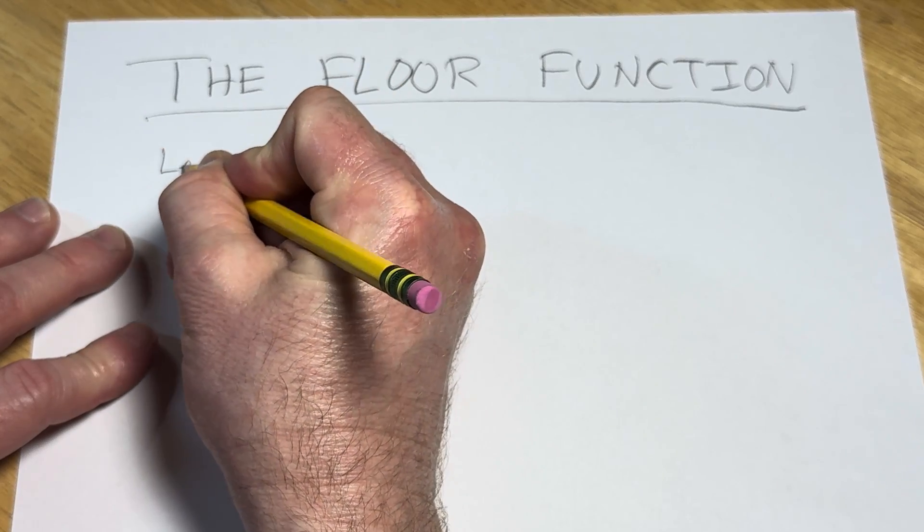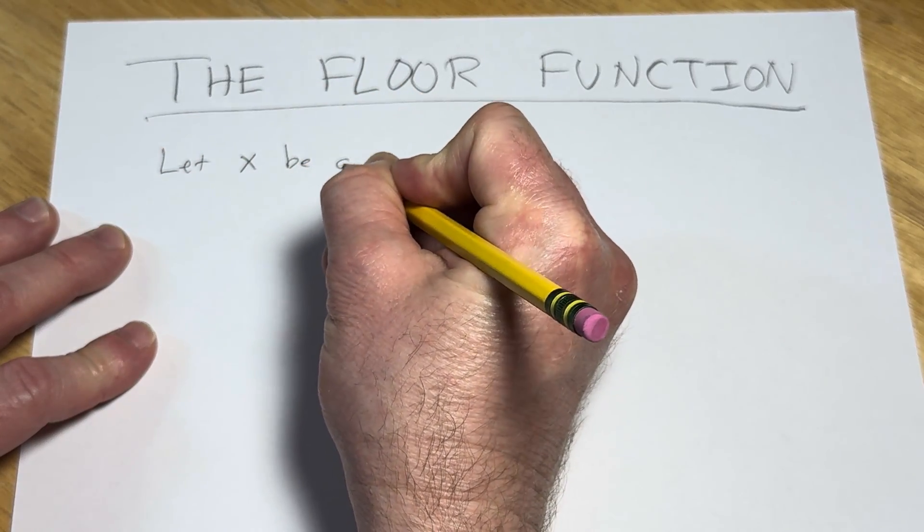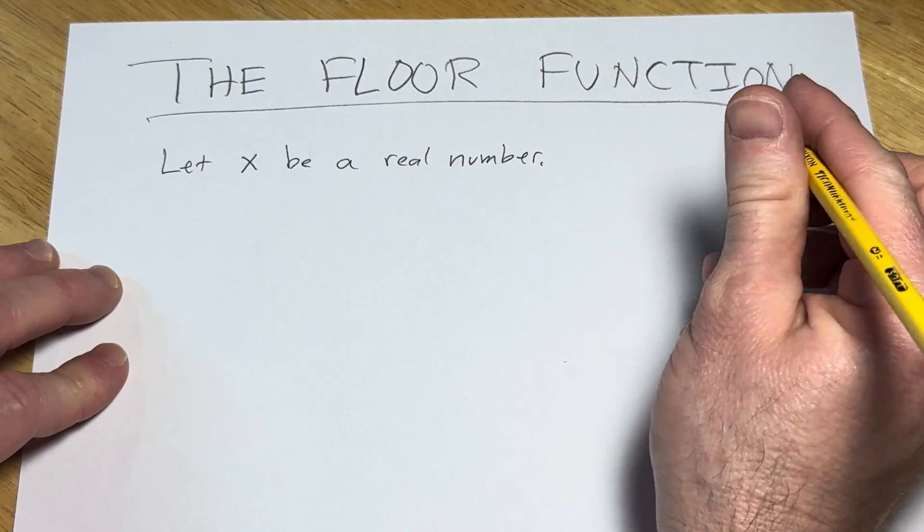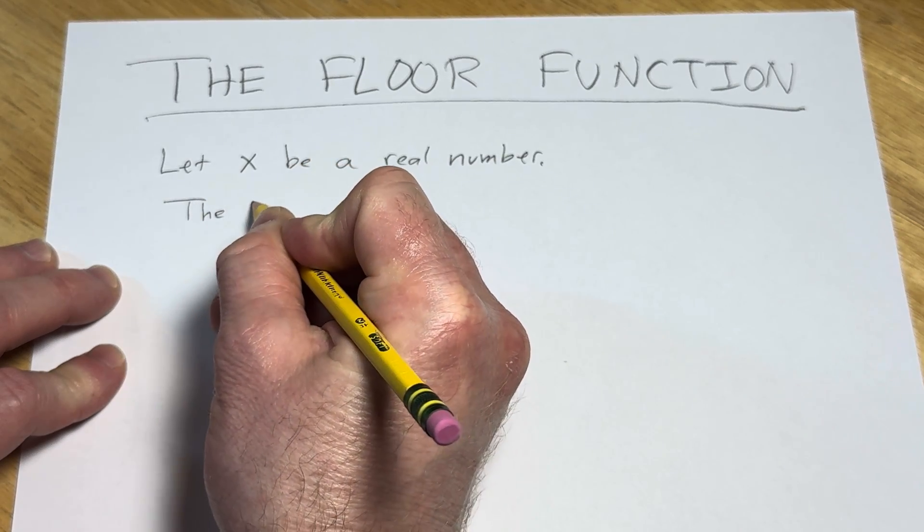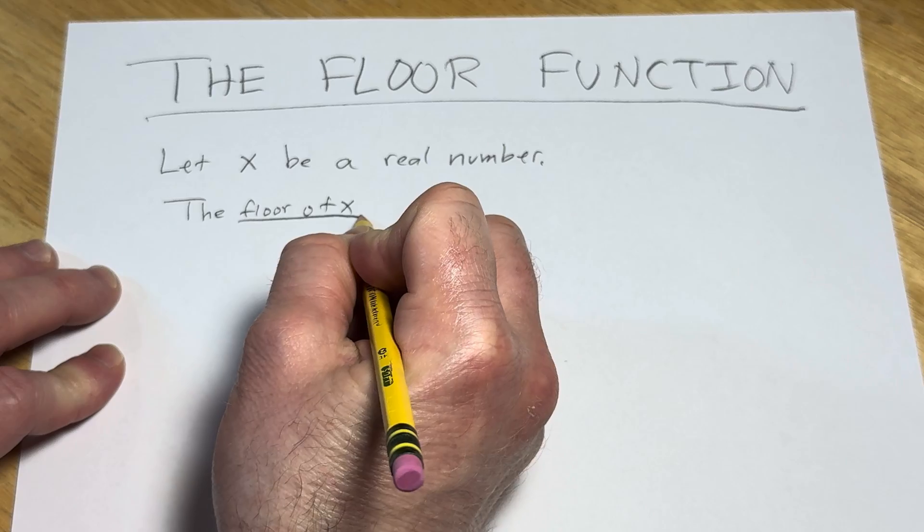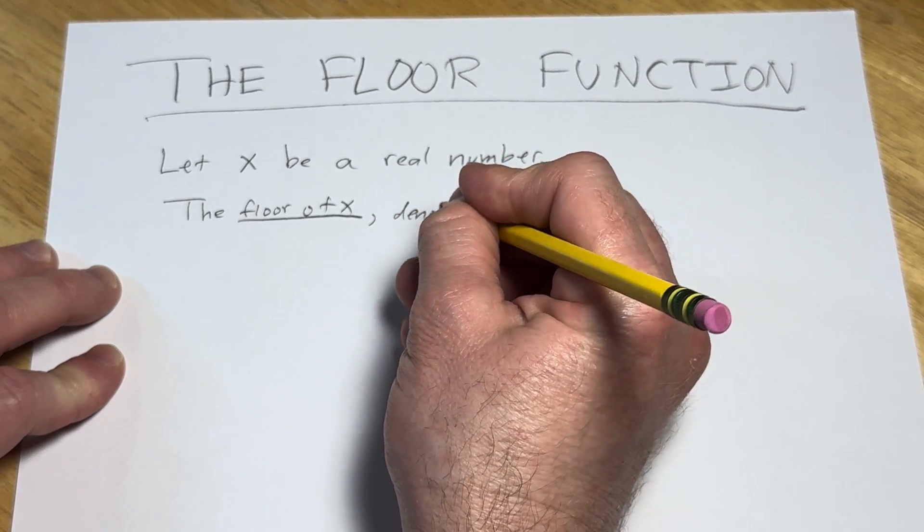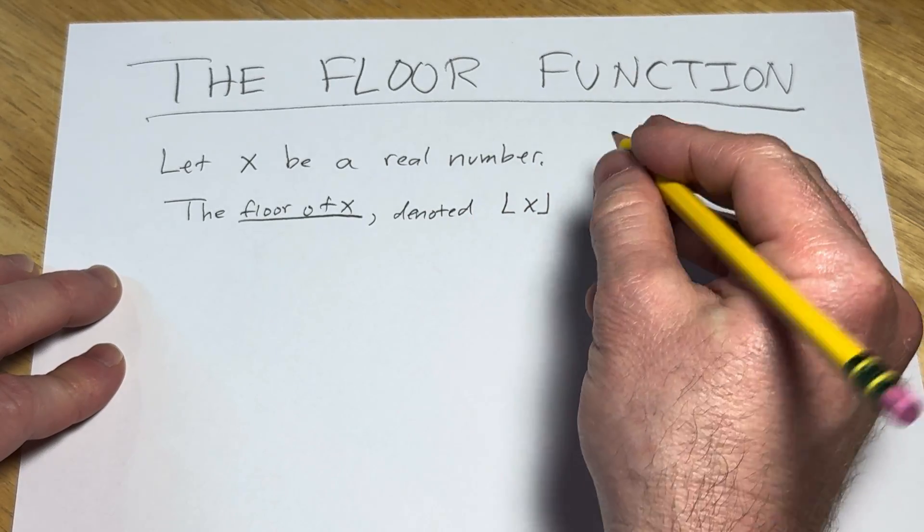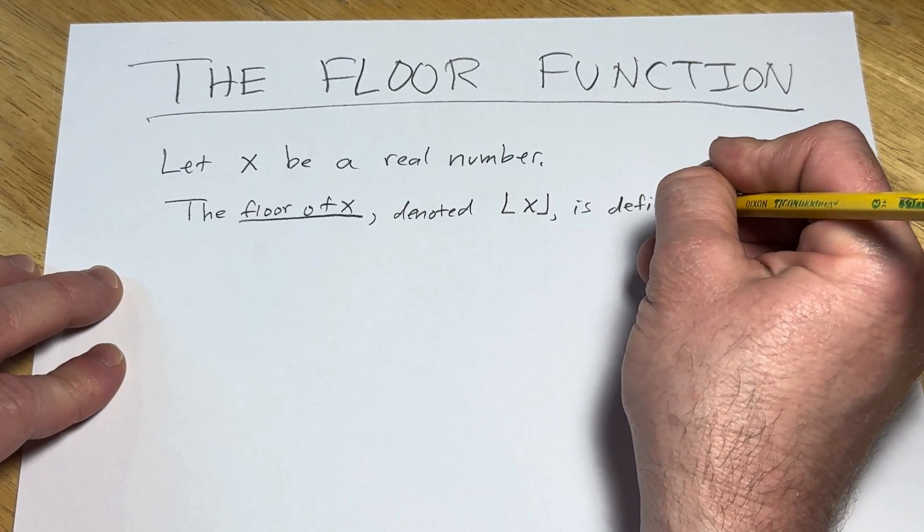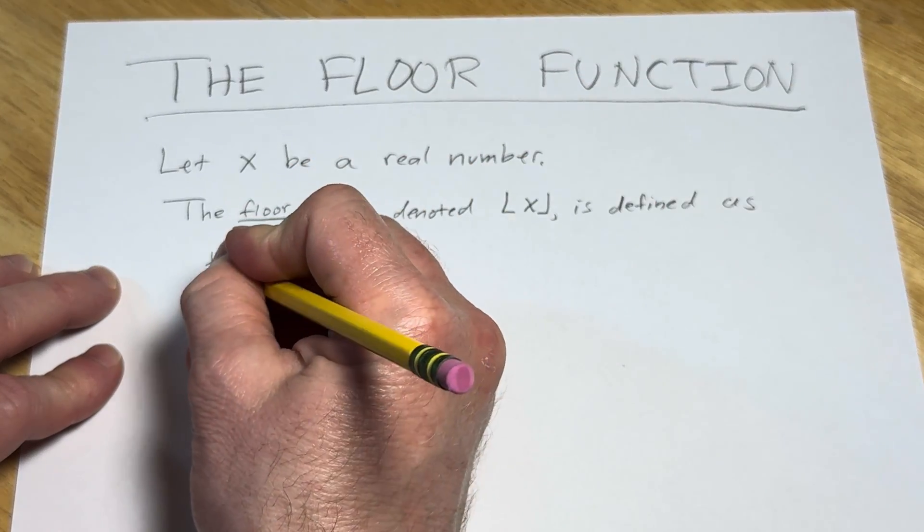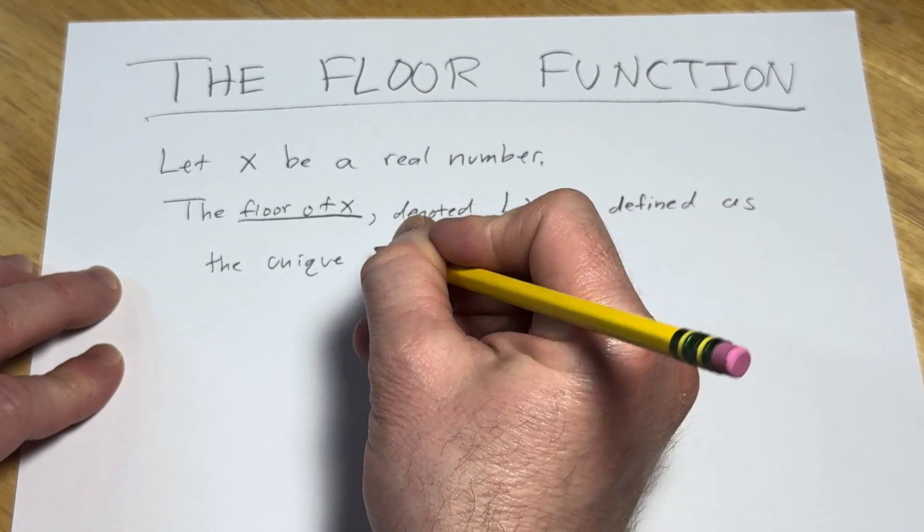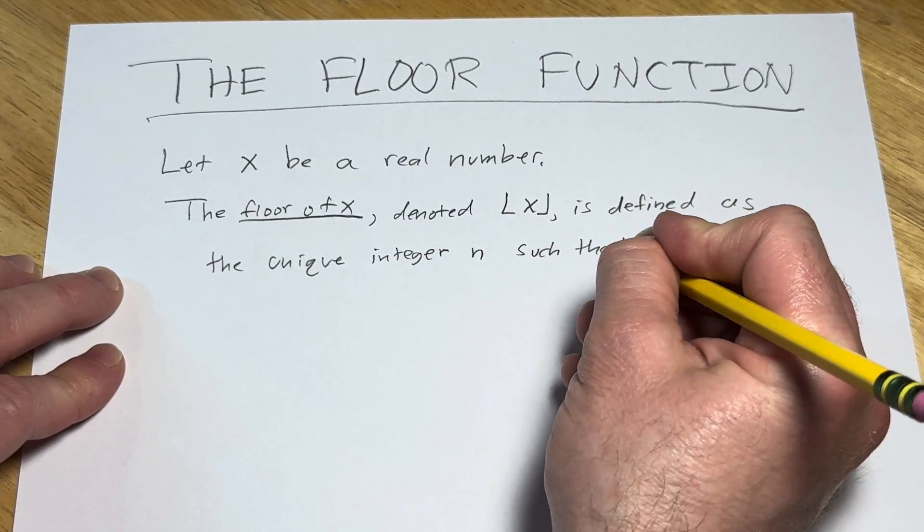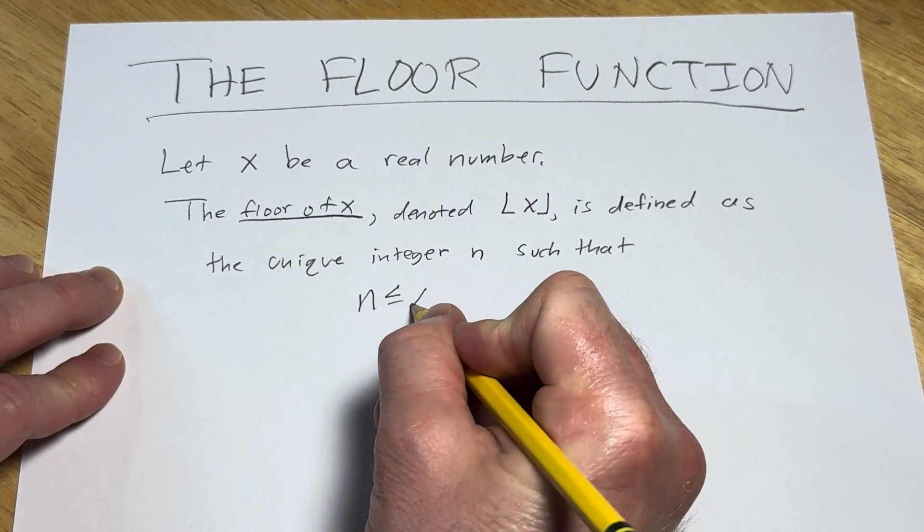So let x be a real number. Then the floor of x, denoted with a bracket notation, is defined as the unique integer n such that we have the following inequality: n ≤ x < n+1.